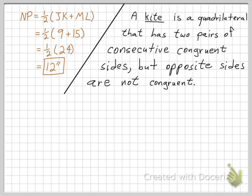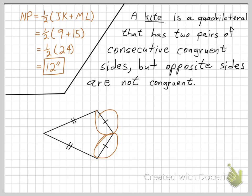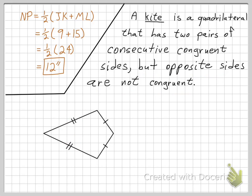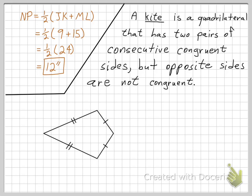Moving right along to the definition of a kite: a kite is a quadrilateral that has two pairs of consecutive congruent sides, but the opposite sides are not congruent to each other. Consecutive means right next to each other. So two consecutive sides are congruent, and there are two such pairs. But the opposite sides are not congruent — one has to be longer than the other, giving the kite its elongated shape.